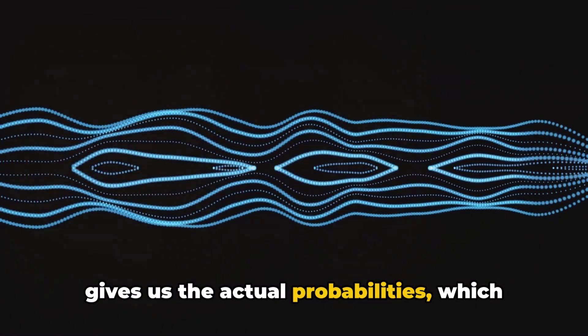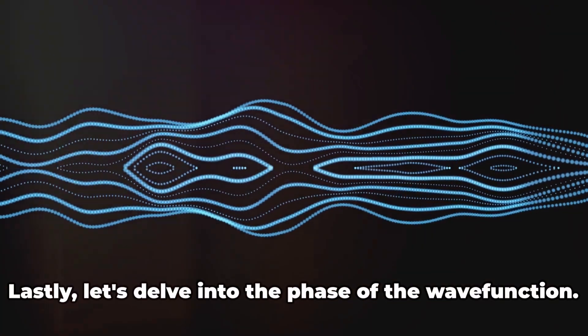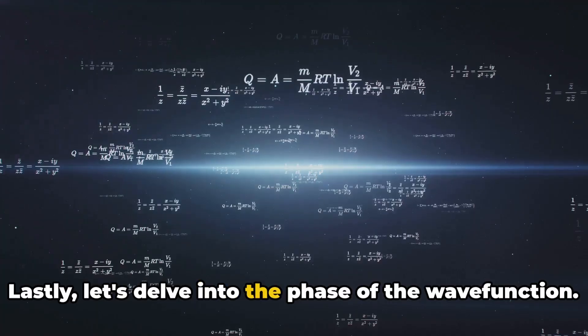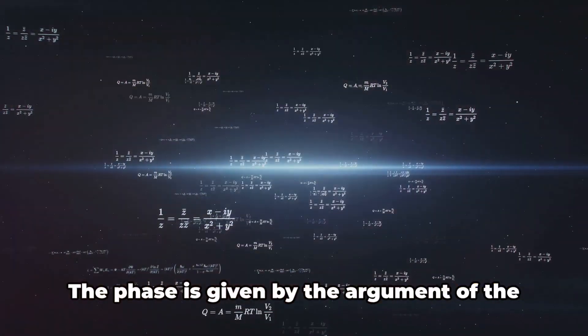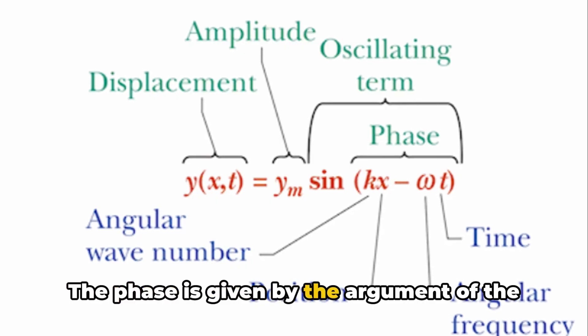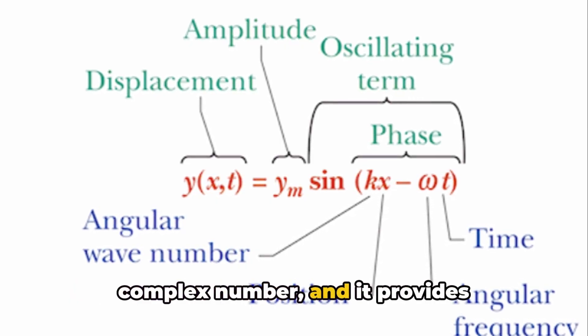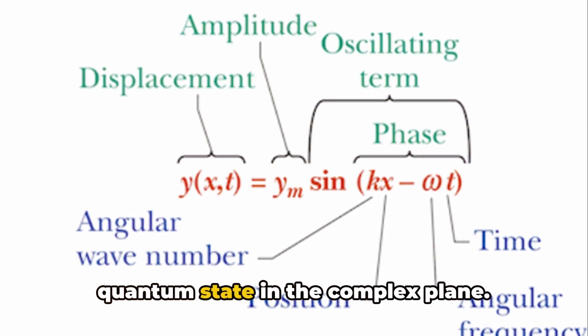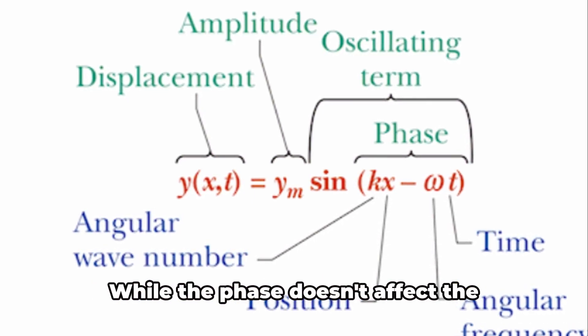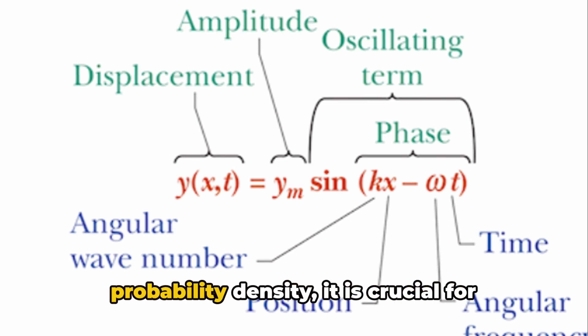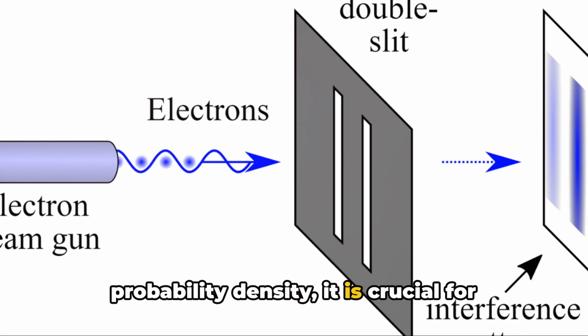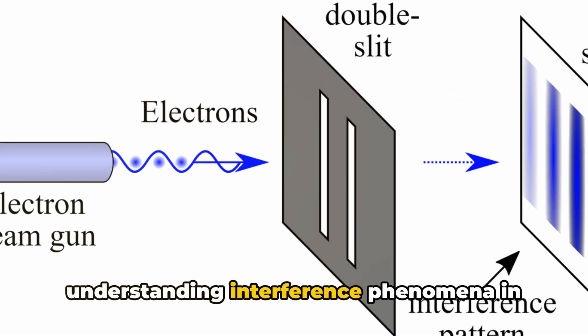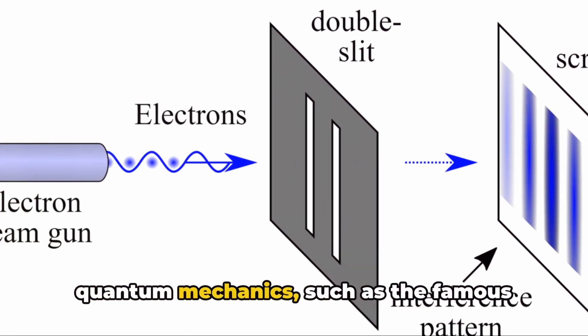Lastly, let's delve into the phase of the wave function. The phase is given by the argument of the complex number, and it provides information about the rotation of the quantum state in the complex plane. While the phase doesn't affect the probability density, it is crucial for understanding interference phenomena in quantum mechanics, such as the famous double-slit experiment.